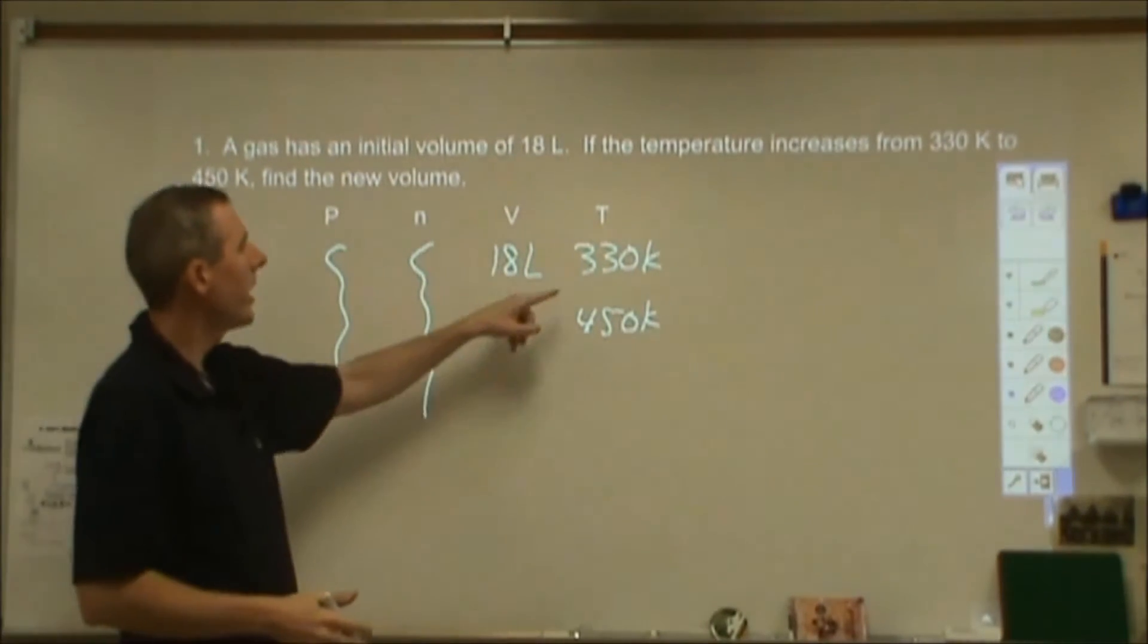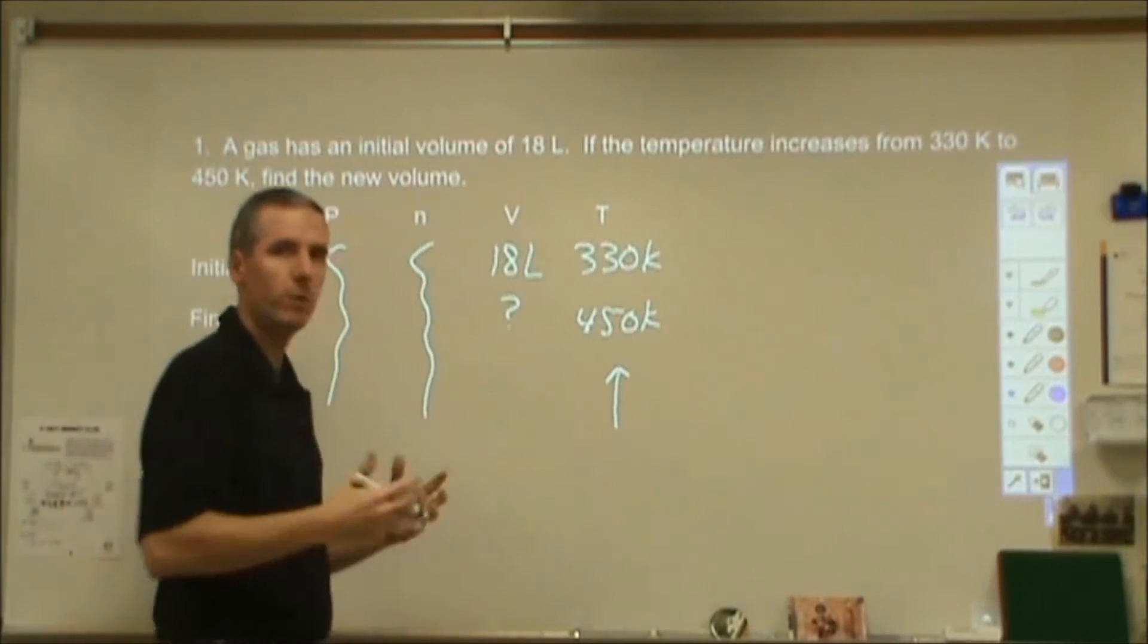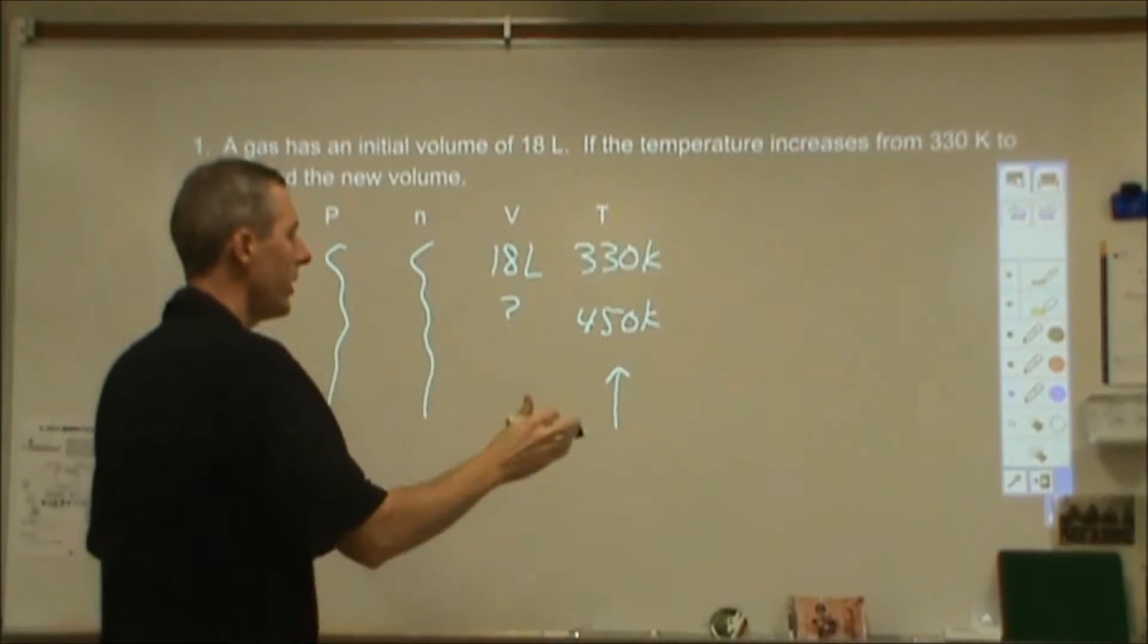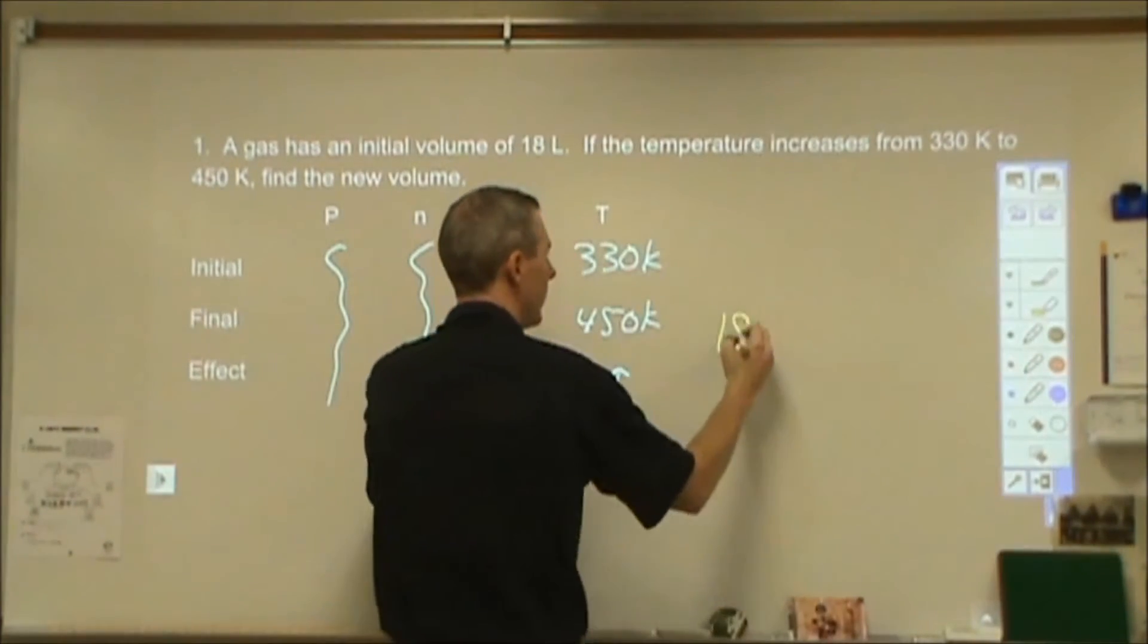We're assuming the amount and the pressure stay constant. What we can do is we can say, will increasing the temperature cause the volume to go up or to go down? Well, these are directly proportional. So what that means is increasing the temperature is going to cause the volume to go up, which is very intuitive. If you heat a balloon, you expect it to expand. The fact that it's going to go up and is directly proportional means I don't need to do any equations to calculate this. All I need to do is say I start with 18 liters and I'm going to adjust it proportionally to these two amounts.